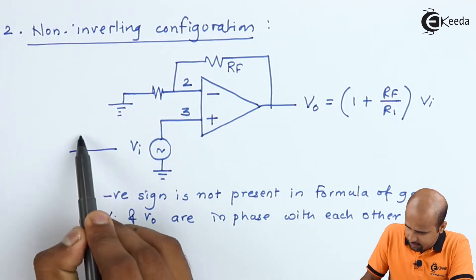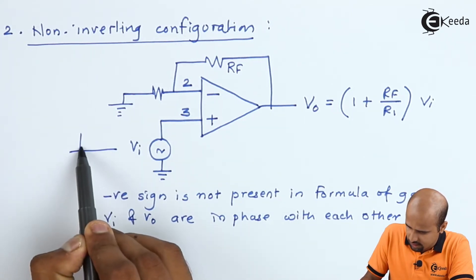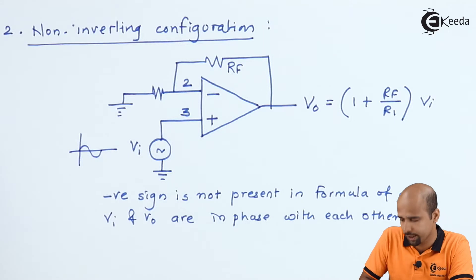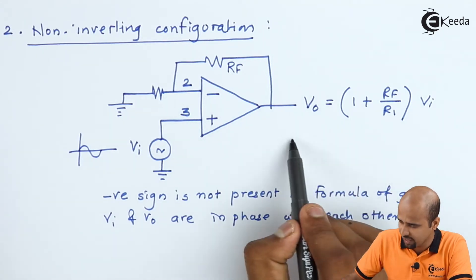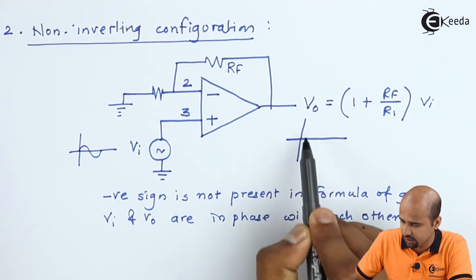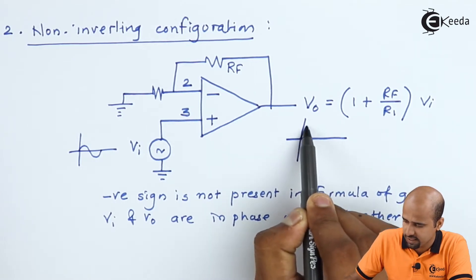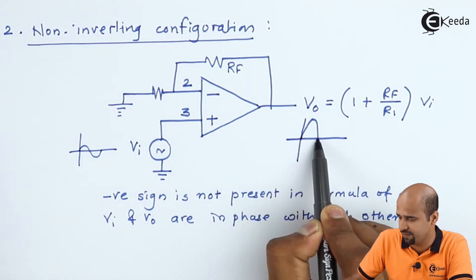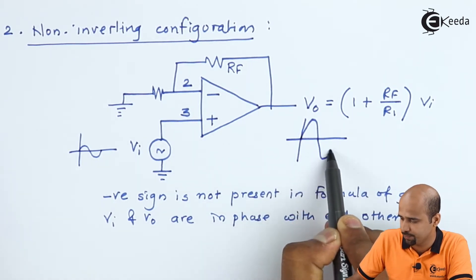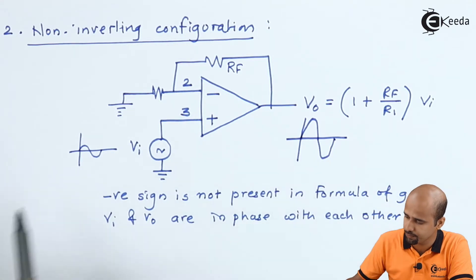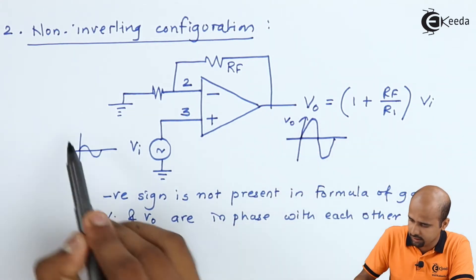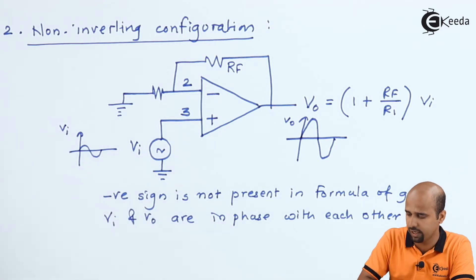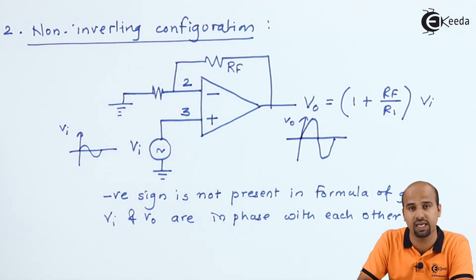If the input has a small magnitude and the first half cycle is positive, then the output will also have the first half cycle positive but with an amplified magnitude. So the input and output are both in phase — a very simple configuration.